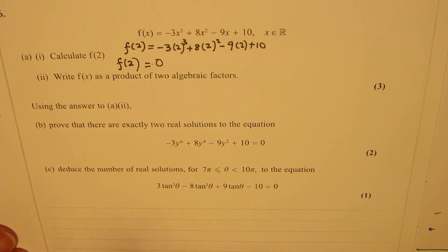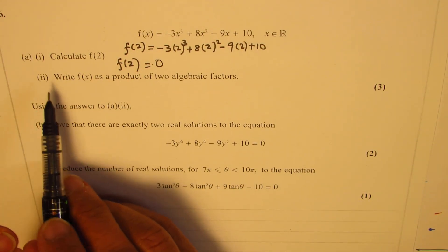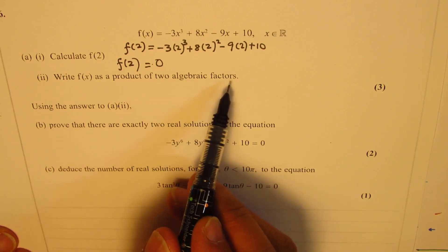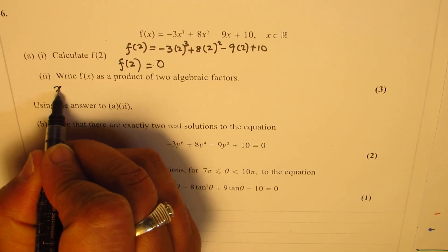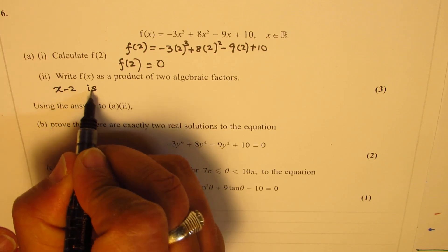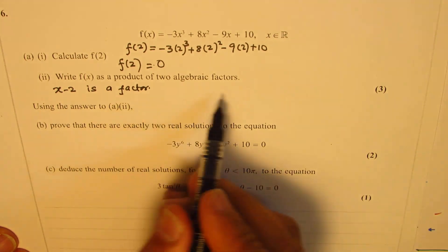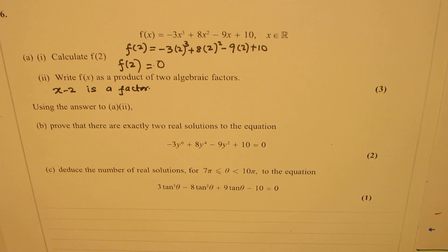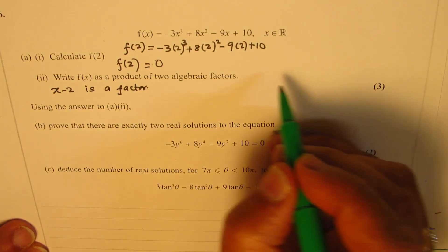What does that mean? It means x minus 2 is a factor. Part B is: write f of x as a product of two algebraic factors. From here, we know that x minus 2 is a factor. To find the second factor, we could perform division. So let's do the long division.